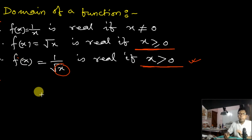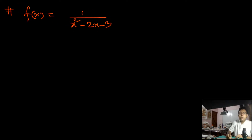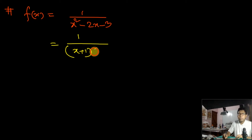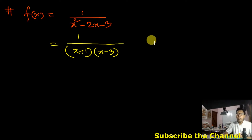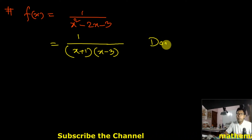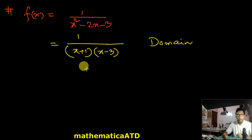I take a function f(x) = 1/(x² − 2x − 3). If you factorize it, you will find it is 1/[(x+1)(x−3)]. If asked to find the domain of this function, you see the denominator cannot be equal to 0.